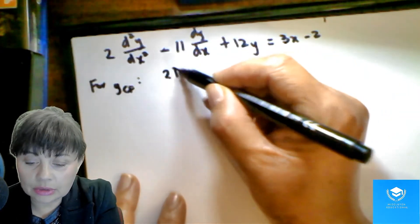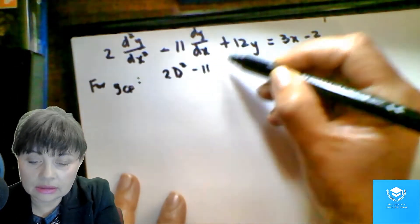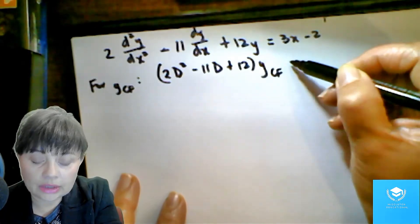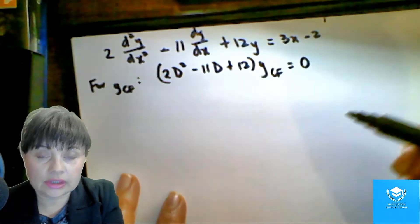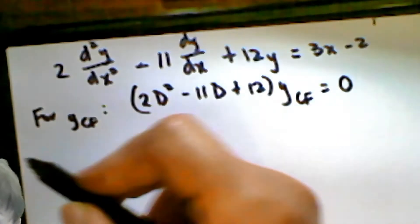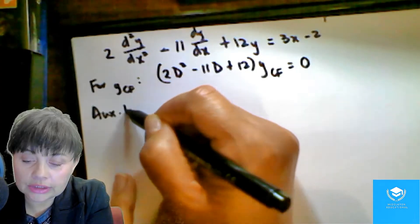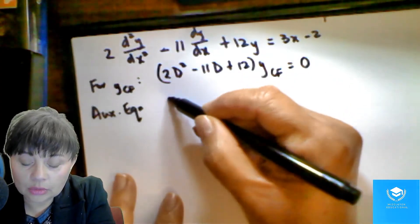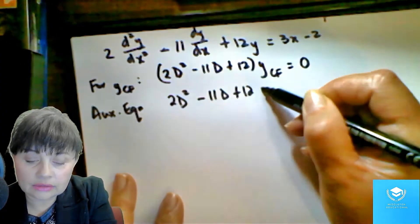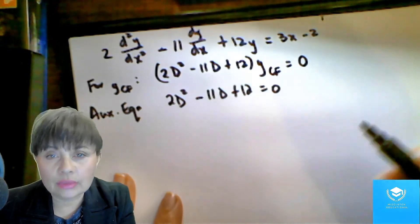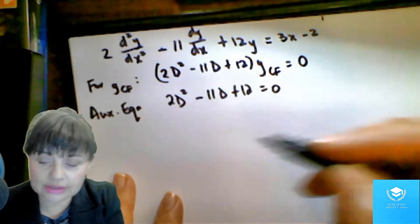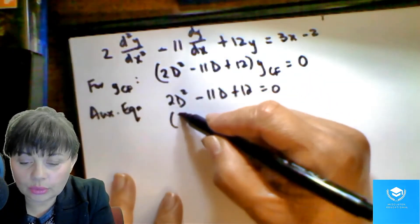So your equation can be written in the operator form, and we know that the complementary function is equal to zero. We know that from the homogeneous cases that we've looked at before. So then we look at our auxiliary equation, which is 2D squared minus 11D plus 12 equals zero. Now you can either prime factorize or you can use your quadratic formula for this. I am going to prime factorize.